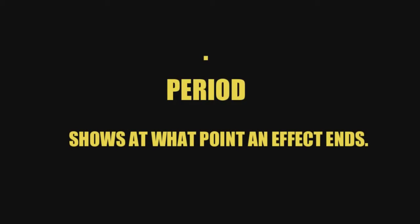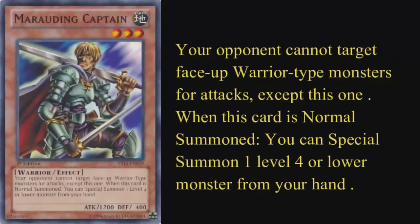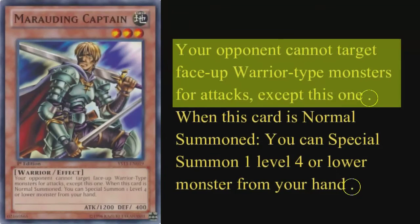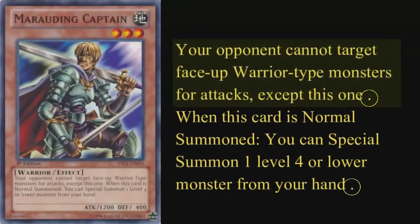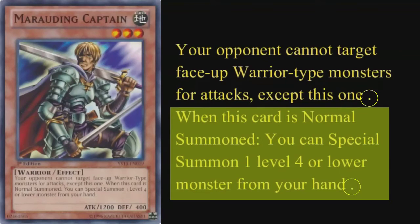The most basic punctuation mark, a period, serves little purpose in PSCT except to show where one effect ends and another begins. For example, the monster card Marauding Captain says: 'Your opponent cannot target face-up warrior-type monsters for attack except this one. When this card is normal summoned, you can special summon one level 4 or lower monster from your hand.' The periods show that Marauding Captain has two distinct effects: a continuous effect which prevents other warriors from being attacked, and a trigger effect which can special summon a monster when he is summoned.